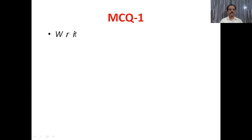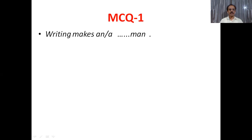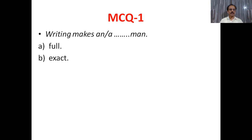Let us move to multiple choice questions. Question one: writing makes a — dash — man. Option A: a full man. Option B: an exact man. Option C: a ready man. Option D: a wise man. The answer is B — writing makes an exact man.